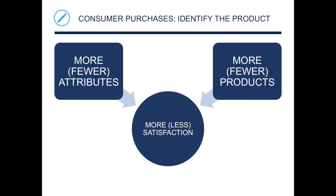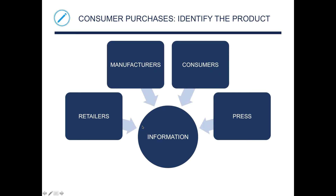For consumer purchases, when identifying the product, you consider more or fewer attributes and more or fewer products, which results in more or less satisfaction. Information used in this process comes from retailers, manufacturers, consumers, and the press.